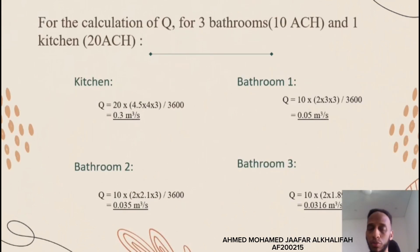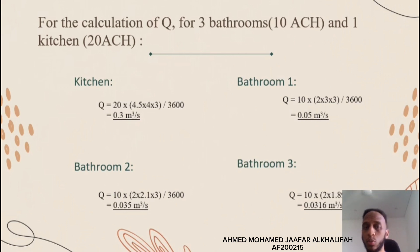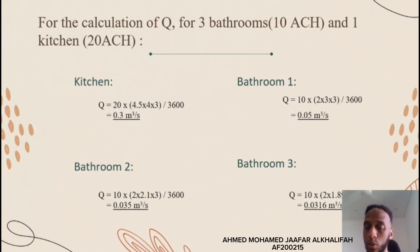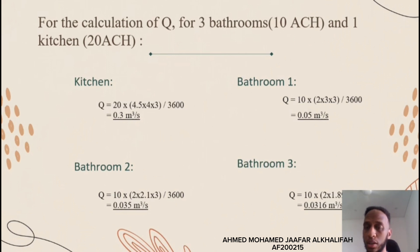For the calculation of Q, which is the flow rate for three bathrooms and one kitchen in our project, using the formula given: Q was equal to 0.3 meters cubed per second. For the first bathroom it was 0.05 meters cubed per second, for the second bathroom it was 0.035 meters cubed per second, and for the third bathroom it was 0.0316 meters cubed per second. These were calculated using the given formula.